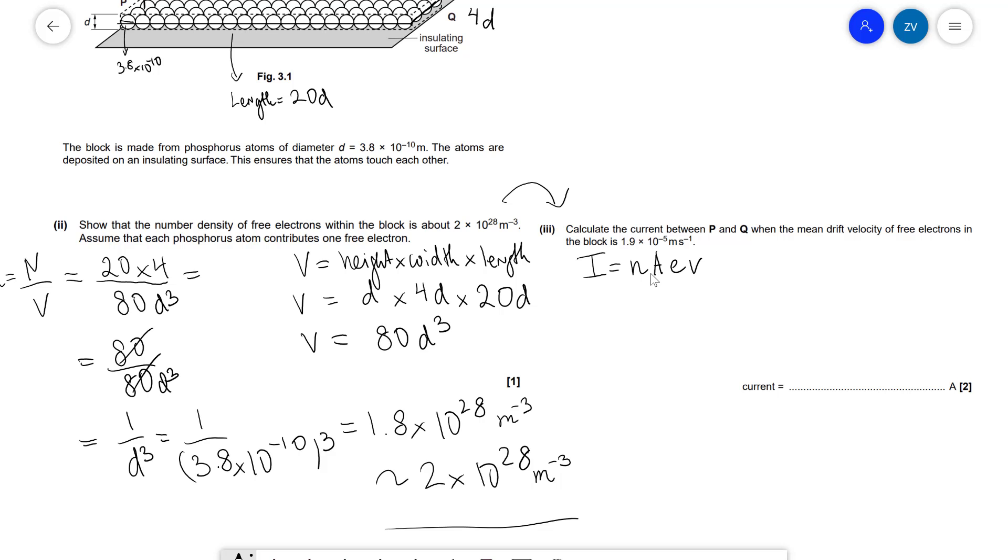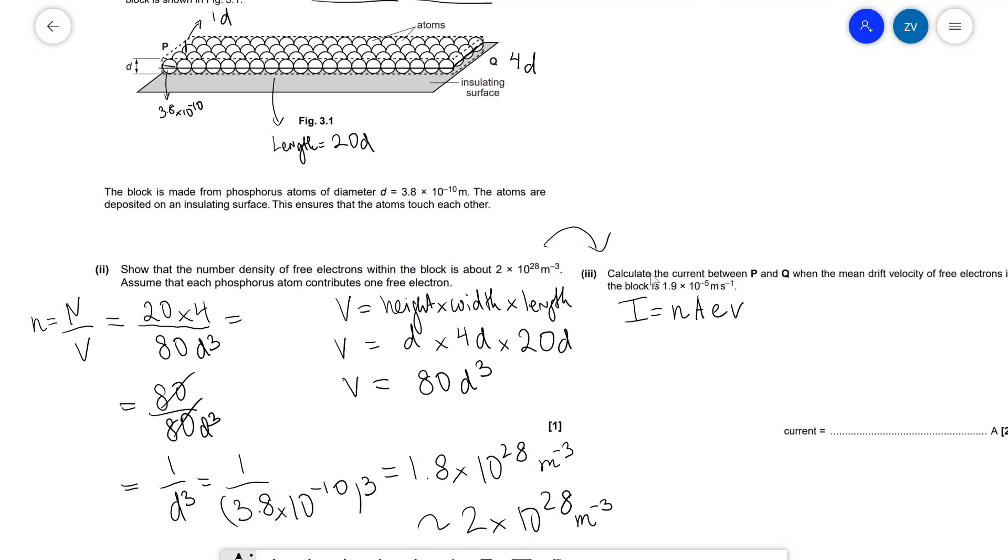This is actually kind of tricky if we think about the way this is conducting. Imagine this is a computer chip and imagine that the current is going along here. Then the cross-sectional area will actually be this rectangle in which the height is equal to the diameter and the length is equal to 4 times the diameter because there are 4 atoms.